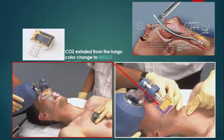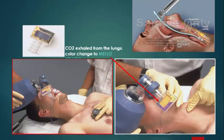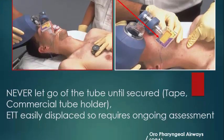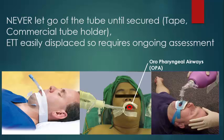During ventilation, confirm proper tube placement. First, auscultate the abdomen while observing chest expansion. Then auscultate the chest bilaterally, ensuring equal bilateral breath sounds. Secure the tube in place using a tube holder and cloth tape.